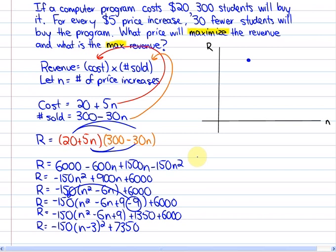Sorry, someone just came into my room. I was saying the vertex is where n is equal to 3 and r is equal to 7,350. So this is the point here, 3 for n and 7,350 for r. In this case, we know also that it opens down.